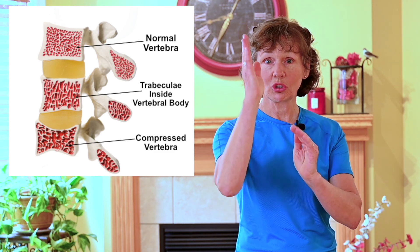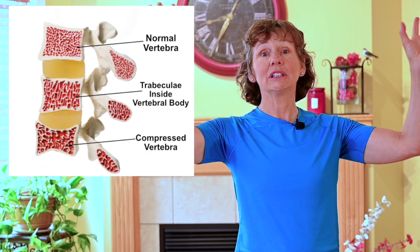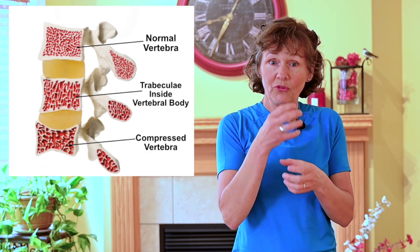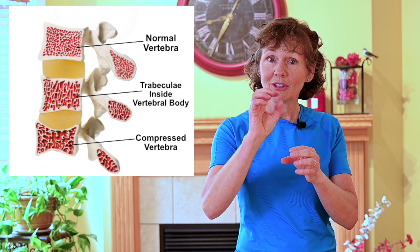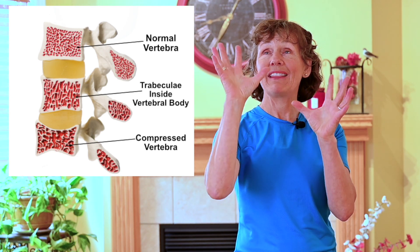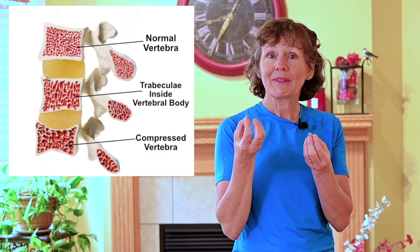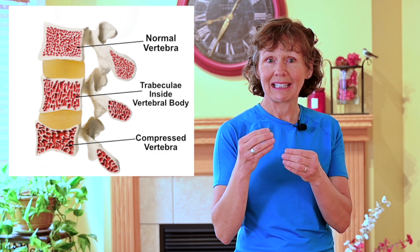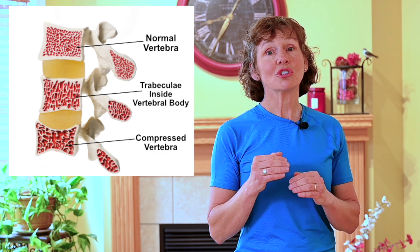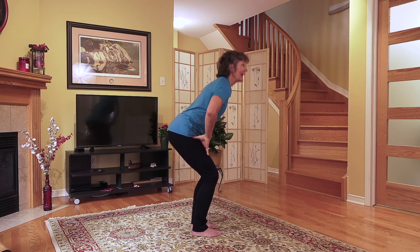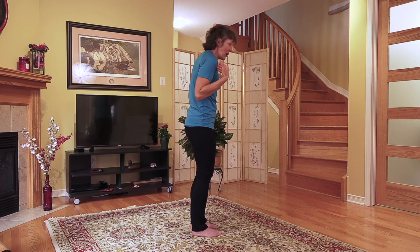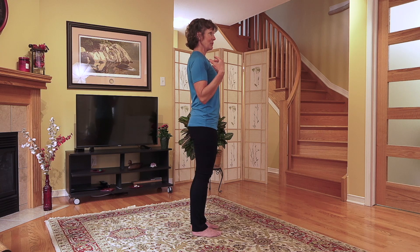Those little trabeculae — the little cross-bridges, the scaffolding inside your vertebral body — you'll lose more and more of them. The internal scaffolding collapse causes the outer shell to collapse, and that is how a compression fracture occurs. So if you've been given a diagnosis of osteoporosis, especially of your spine, you need to be immaculate about bending from your hips and knees and not rounding through your spine, especially in standing positions.